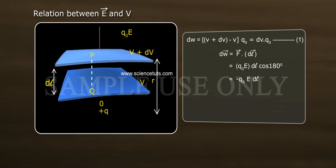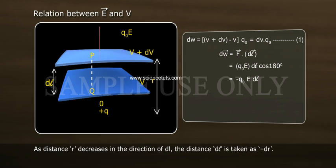dW is equal to F bar dot dL bar equal to Q naught E dL cos 180 degree equal to minus Q naught E dL. As distance R decreases in the direction of dL, the distance dL is taken as minus dL.